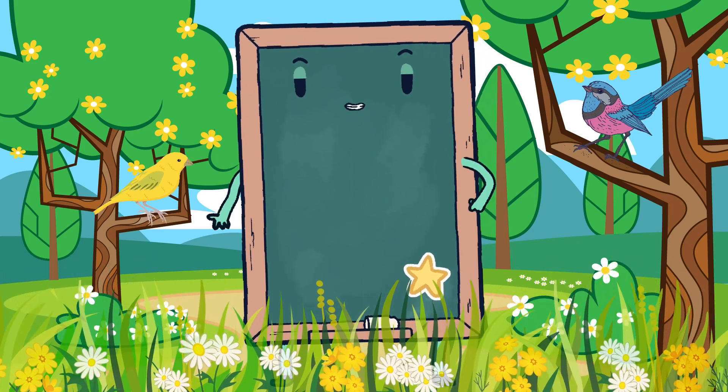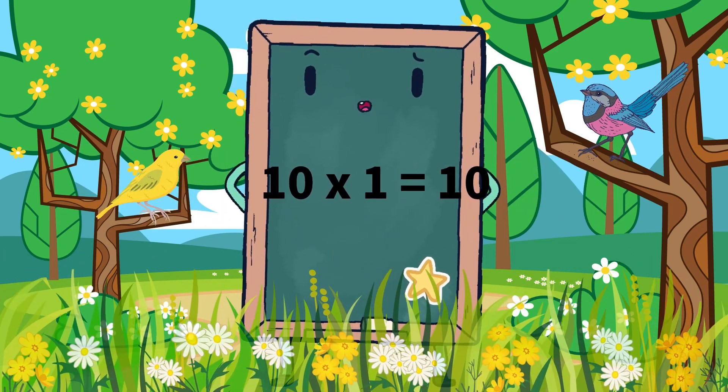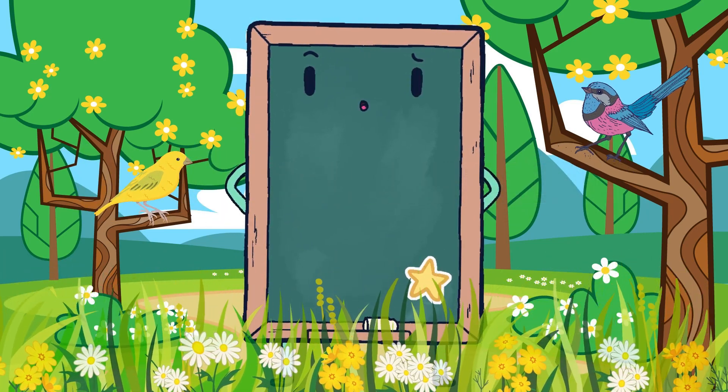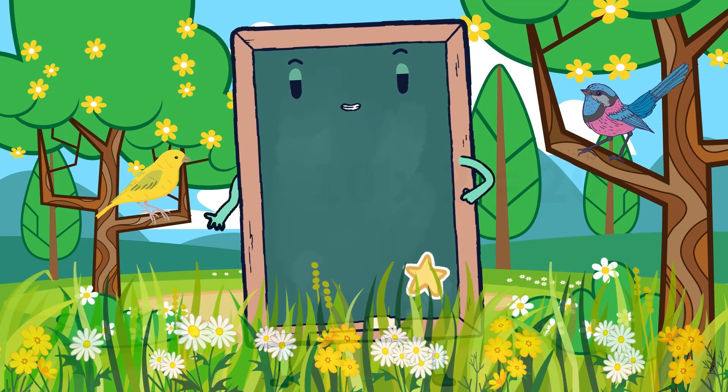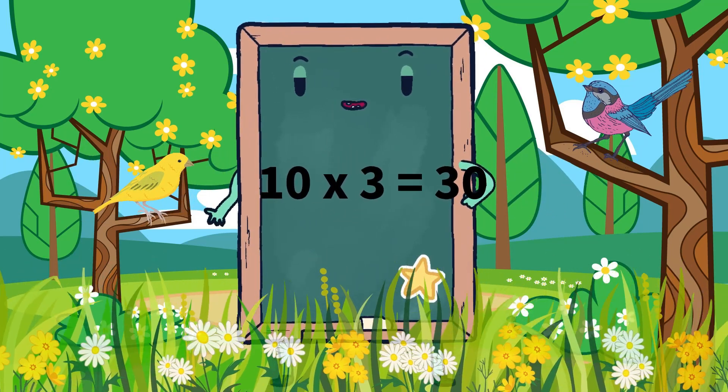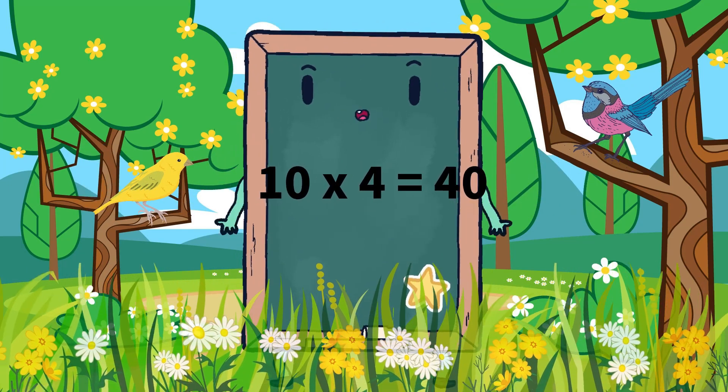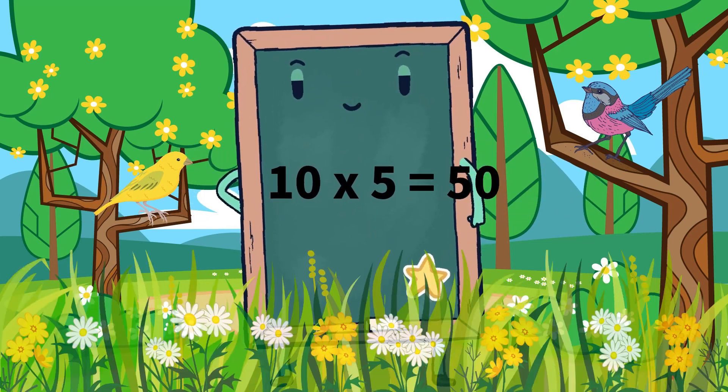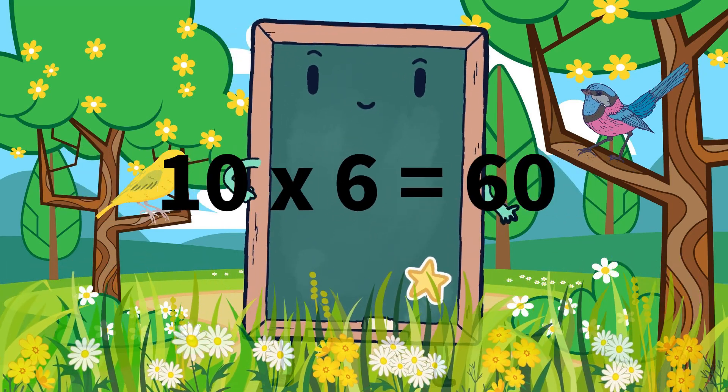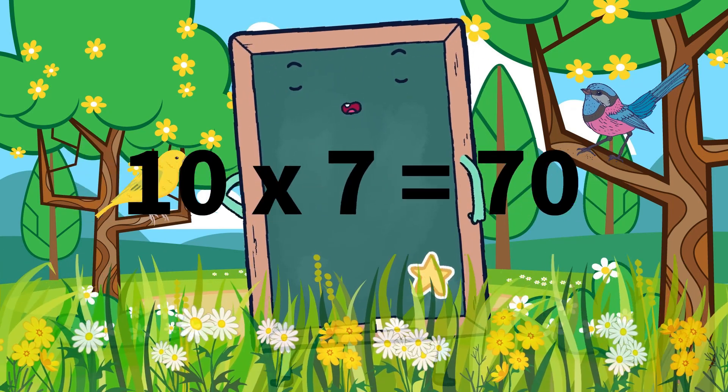So, let's learn it again. 10 ones are 10, 10 ones are 10, 10 twos are 20, 10 twos are 20, 10 threes are 30, 10 threes are 30, 10 fours are 40, 10 fours are 40, 10 fives are 50, 10 fives are 50, 10 sixes are 60, 10 sixes are 60, 10 sevens are 70,